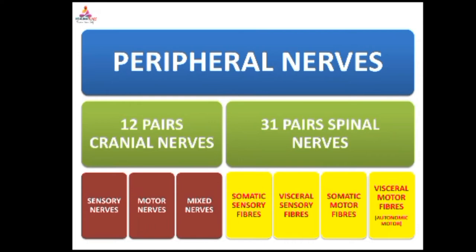Somatic sensory fibers convey nerve impulses from the skin, bones, muscles, and joints to the CNS. Visceral sensory fibers convey nerve impulses from visceral organs and blood vessels to the CNS. Somatic motor fibers carry nerve impulses from the CNS to the skeletal muscles. Visceral motor fibers — also called autonomic motor fibers — carry impulses from the CNS to the cardiac muscles, glands, and smooth muscles within the visceral organs.